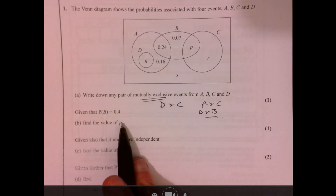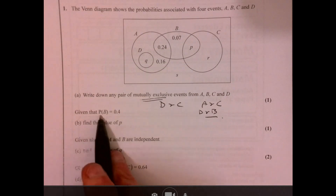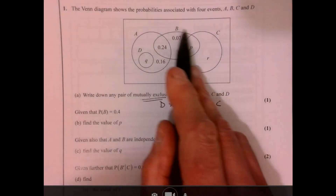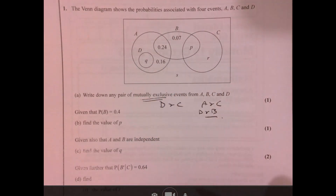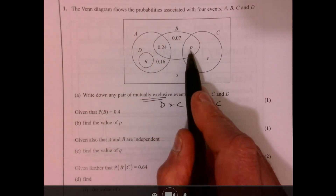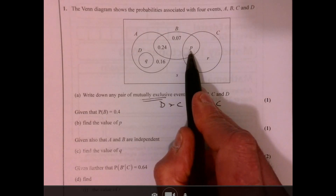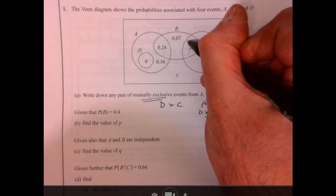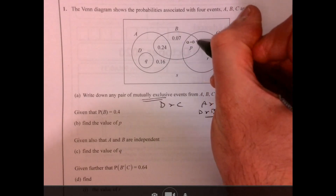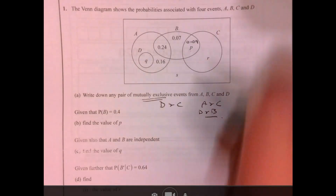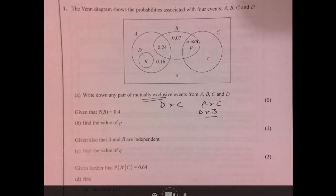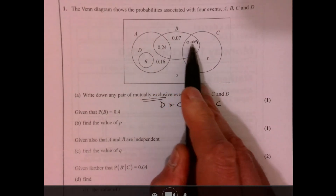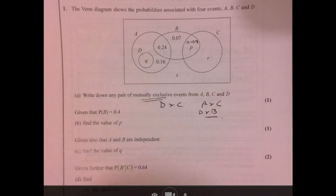Now find the value of P. We're told that the probability of B — so that's all of this bit — equals 0.4. So this region here is 0.4, which means this one here has to be 0.09, because these three add up to 0.4. When you find out bits, write them onto the diagram — it just helps out a little bit.